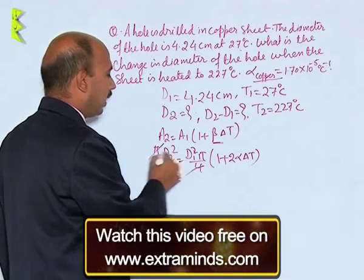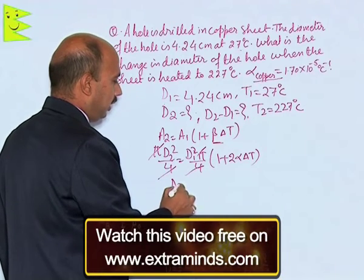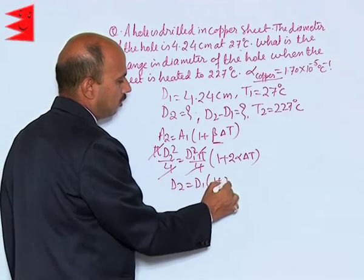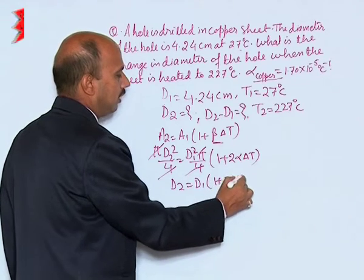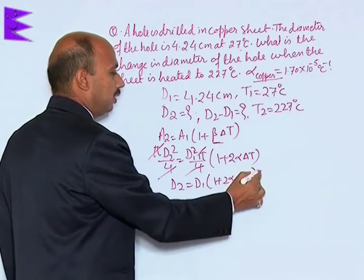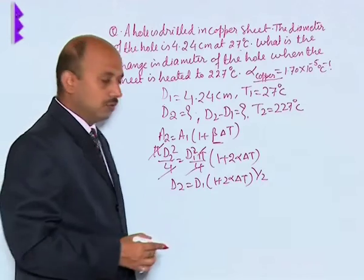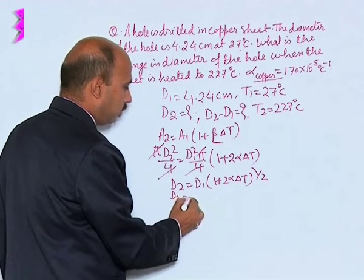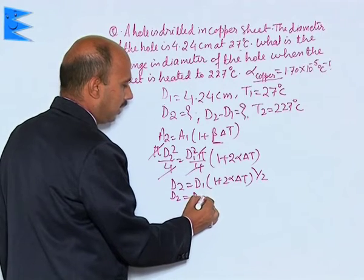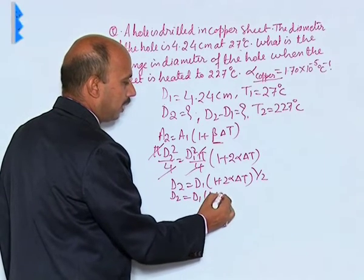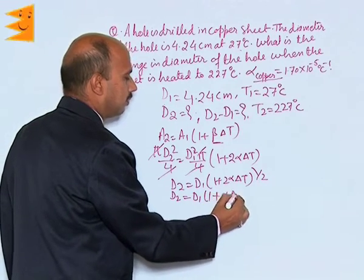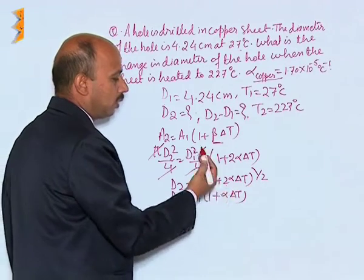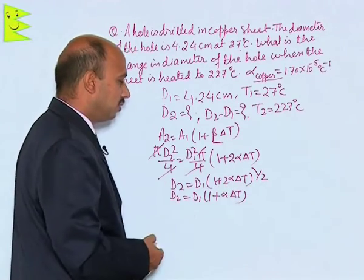Now, this 4 and this 4 pi pi will get cancelled. D2 is equal to D1 into 1 plus alpha delta T, because this 1 upon 2 I have written here using binomial. So 2 and 2 gets cancelled.